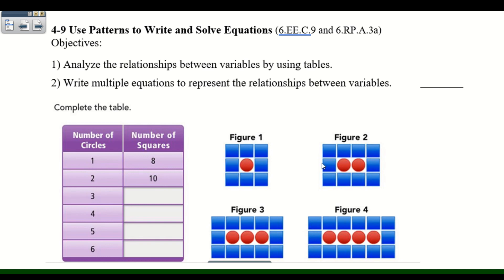When we have two circles — two red circles — we have 10 total squares. So when we have three circles, we can just count, and if we count all of the squares, we'll end up seeing 12. In figure four, when we have four circles and we count all the squares, we get 14.